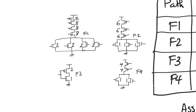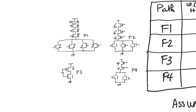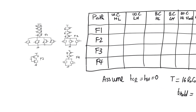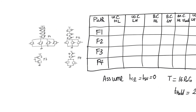We also need to check if there are hold time violations, for which we need to look at the best case delays. The reason we are looking at both low-to-high and high-to-low transitions is that for at least one of the gates — which is gate F1 — there is asymmetric delay. So let's calculate the worst case and best case high-to-low and low-to-high delays.